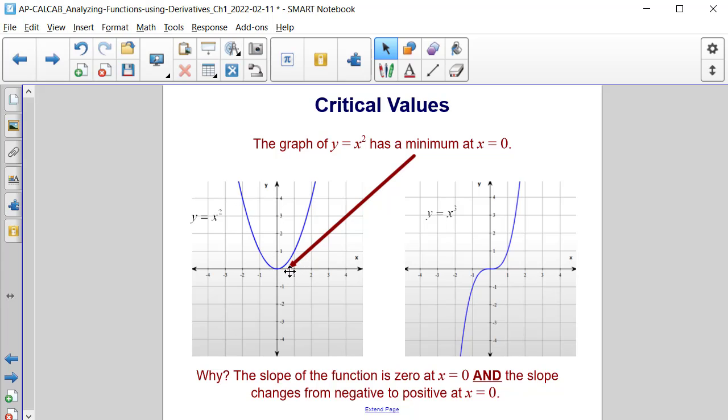In x cubed, we have a slope being positive on both sides of 0, so therefore the slope doesn't change. Therefore, it is neither a maximum nor a minimum in y equals x cubed.